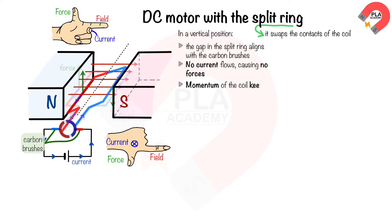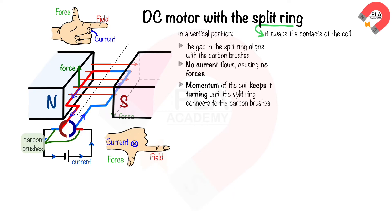The momentum of the coil keeps it turning until the blue split ring connects to the red carbon brush and the red split ring connects to the blue brush. This reverses the direction in which the current is flowing in both sides of the coil, keeping the current leaving the motor in the same direction. Reversing the direction of the current also reverses the direction of the forces acting on both sides of the coil.